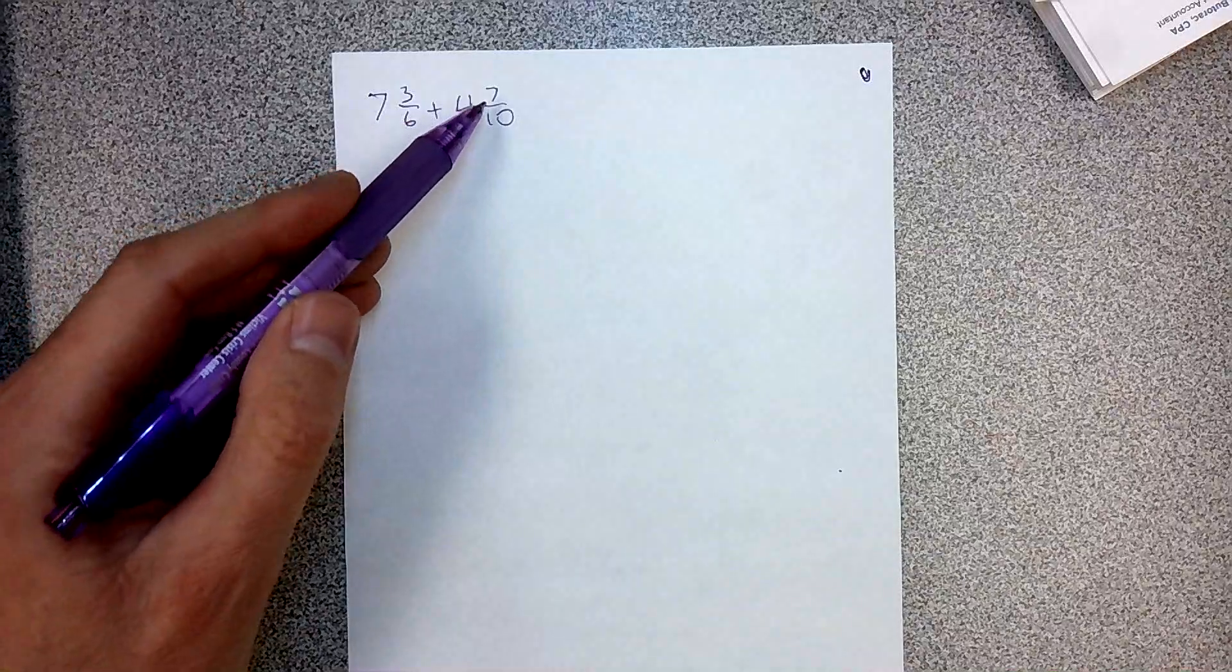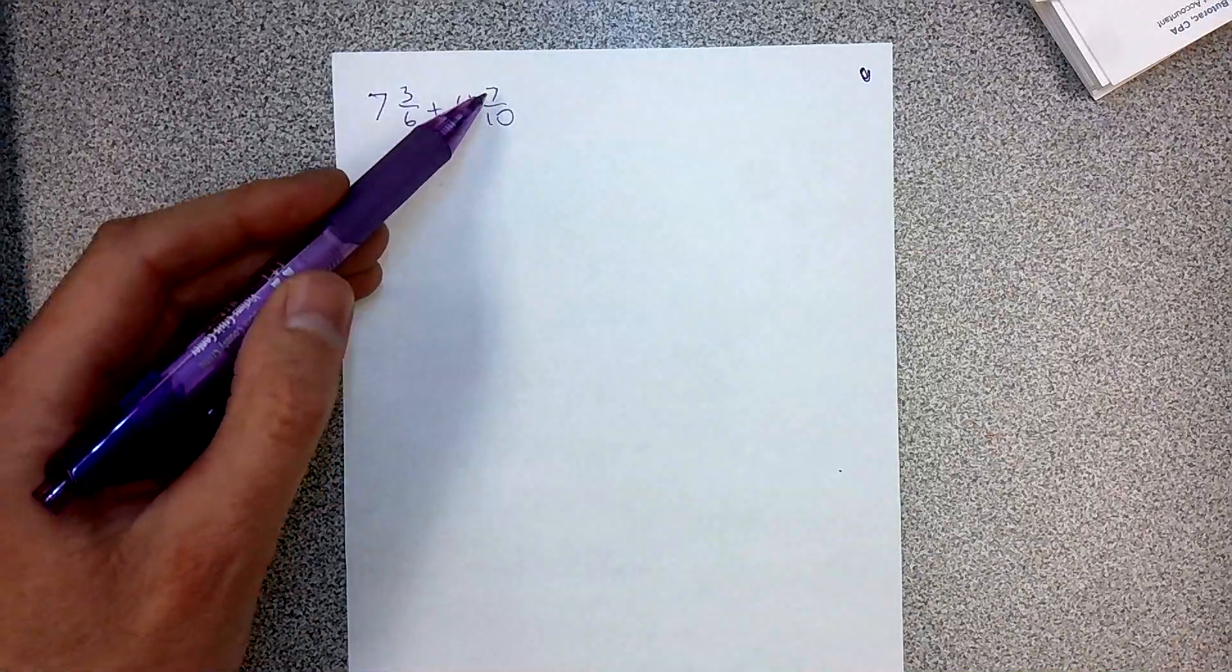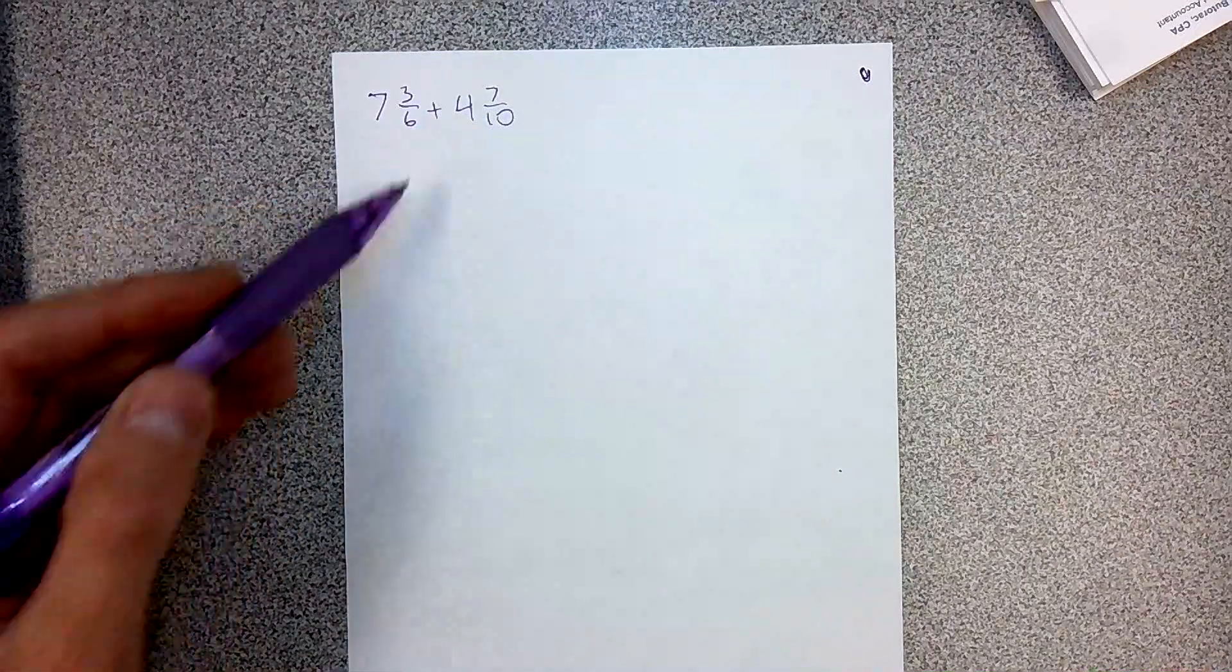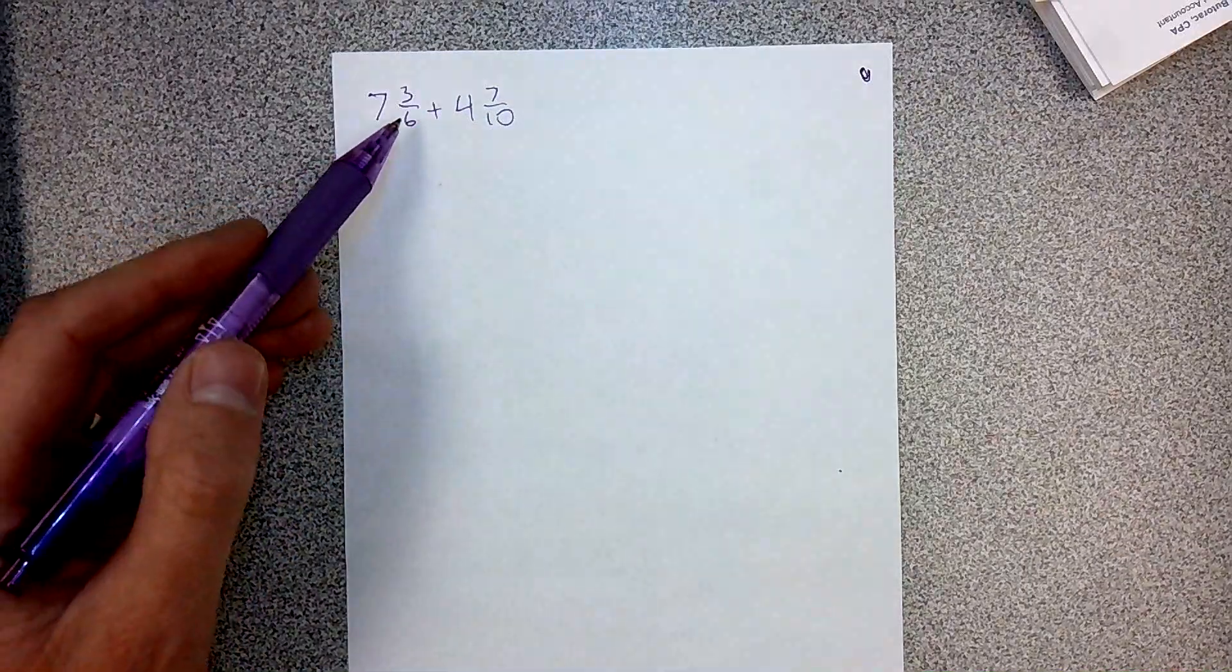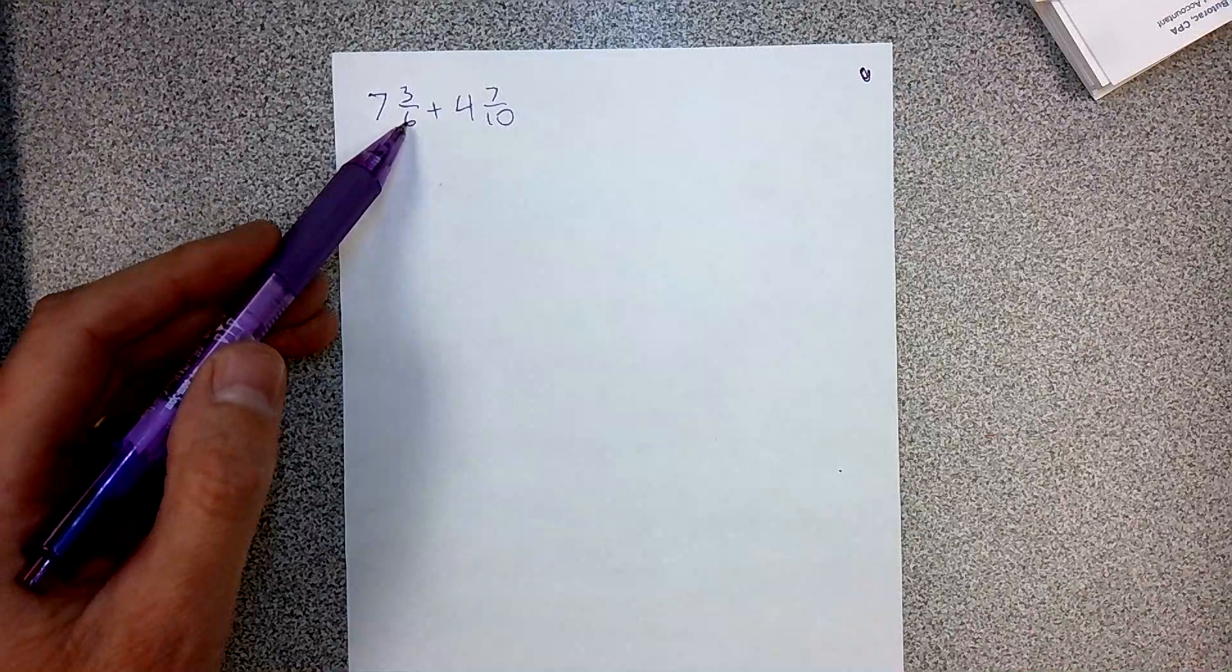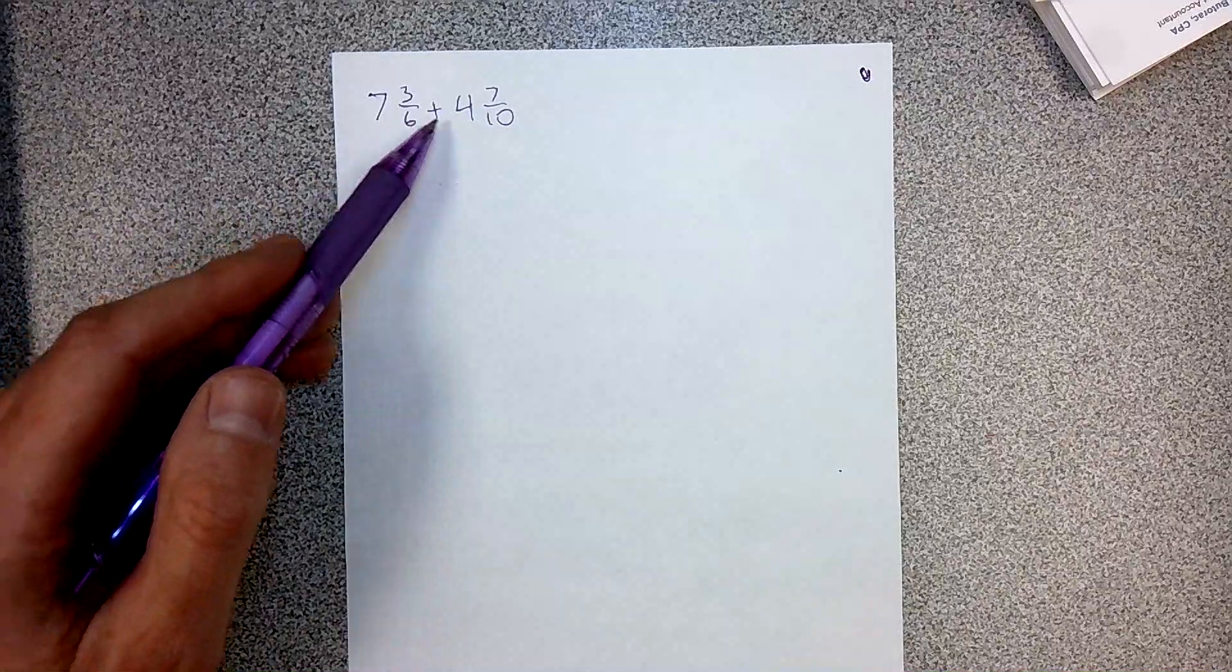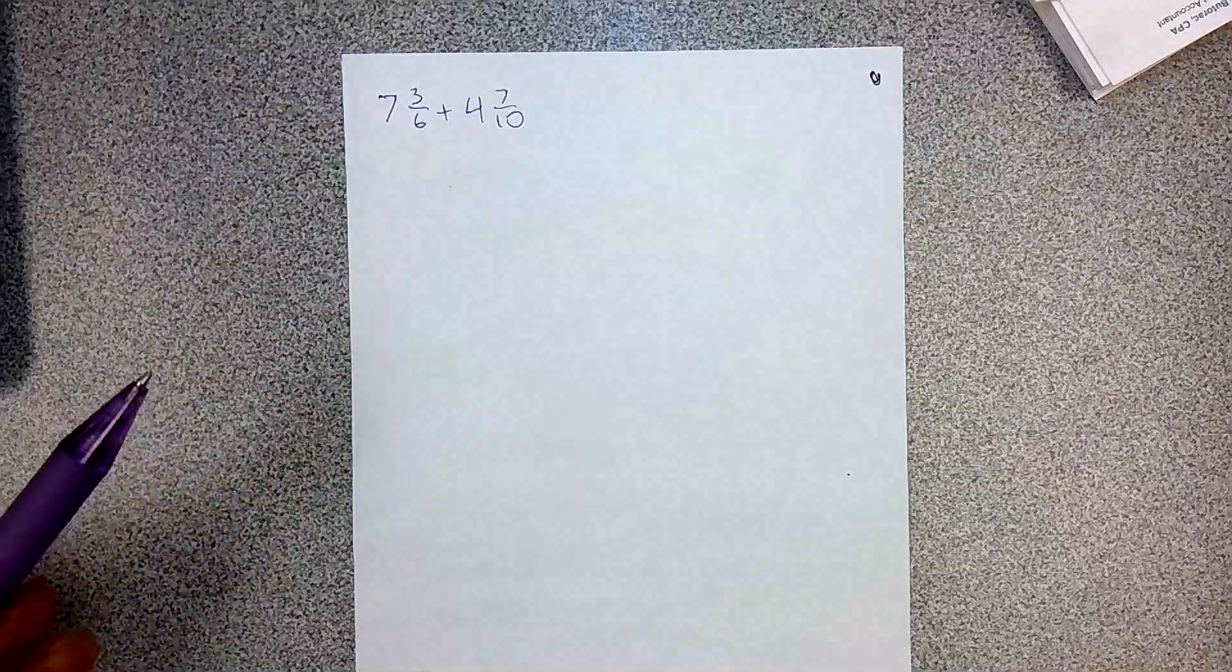Three inches and seven inches. Three sixths and seven, we need this to be the same label so we can combine them together. You could use 60. You could do 6 times 10 and you could do 10 times 6 and that would be fine. You could use 30. 30 would be another common denominator. 6 times 5 and 10 times 3.